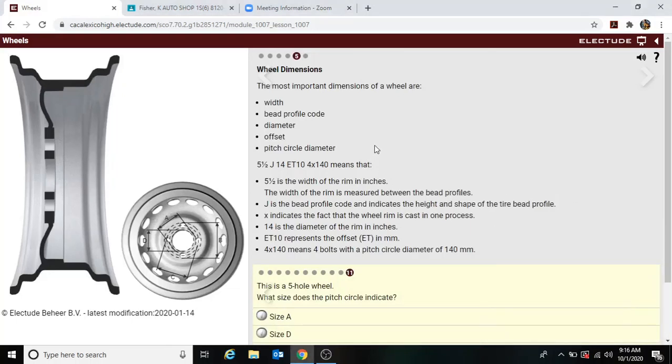Now we're going into lesson five, wheel dimensions. The most important dimensions of the wheel are width, bead profile, diameter, offset, and pitch circle diameter. So 5.5 inch J 14 ET10 4x140 means that 5.5 is the width of the rim in inches.